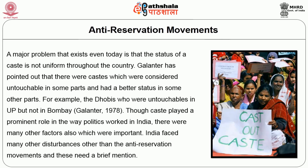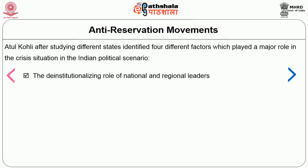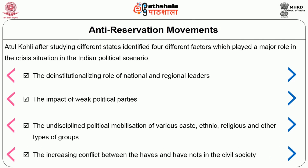Though caste played an important role in the way politics worked in India, there were many other factors which were important. India faced many other disturbances other than anti-reservation movements. Atul Kohli, after studying different states, identified four different factors which played a major role in the crisis situation in the Indian political scenario: the de-institutionalizing role of national and regional leaders; the impact of weak political parties; the undisciplined political mobilization of various castes, ethnic, religious and other types of groups; and four, the increasing conflict between the haves and the have-nots in civil society.